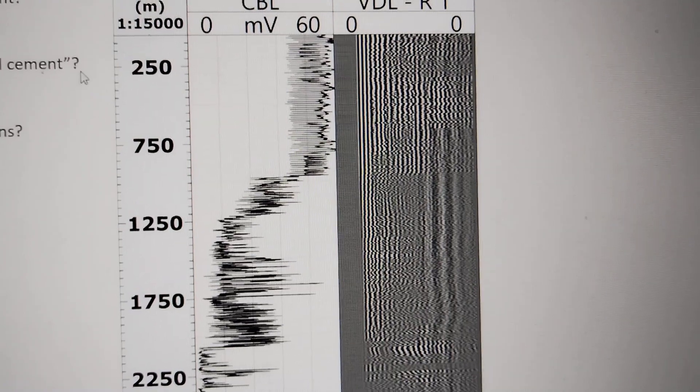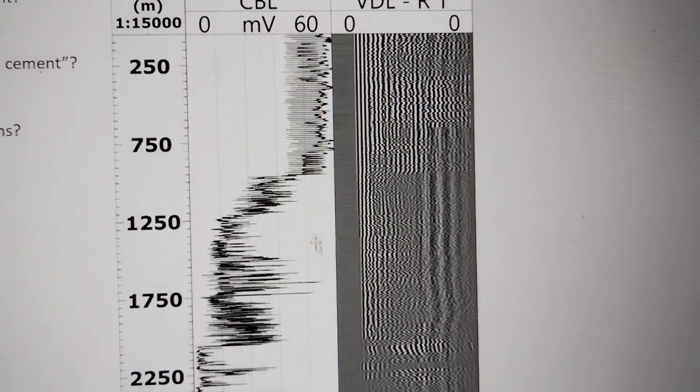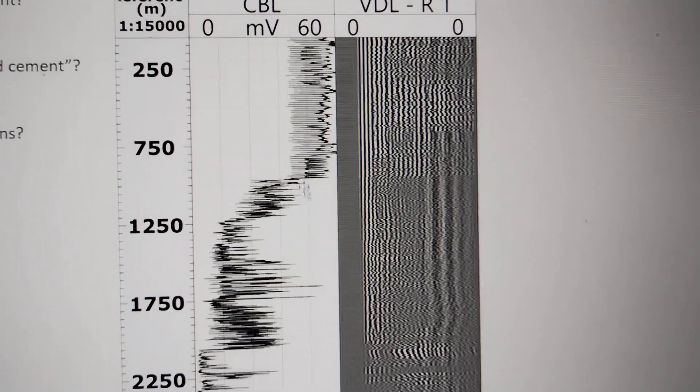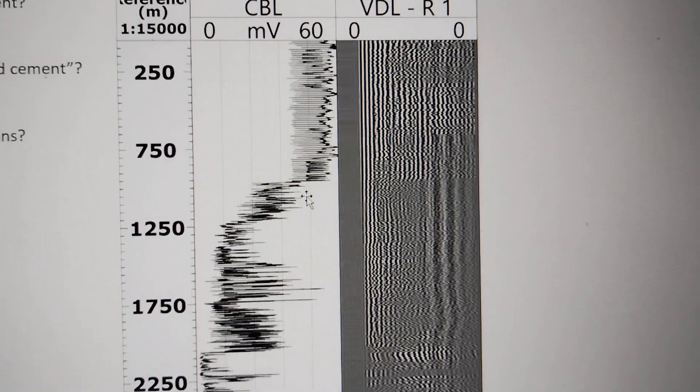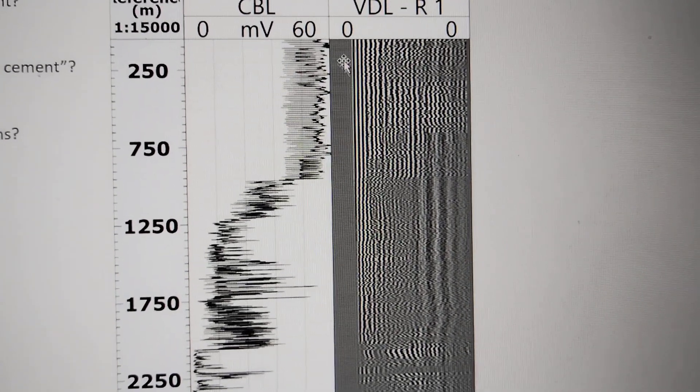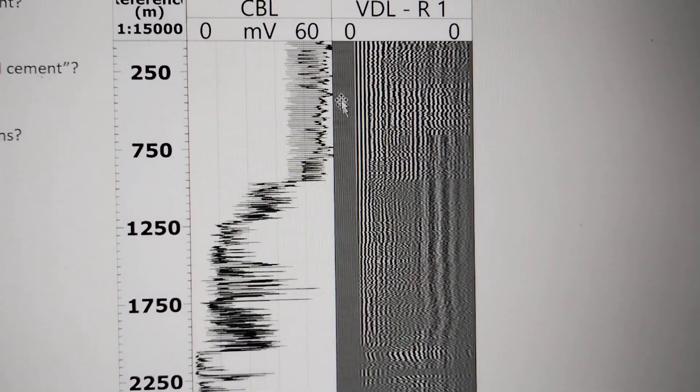Where is the good cement? This area represents good cement. For the VDL, you can see here this area shows the casing.